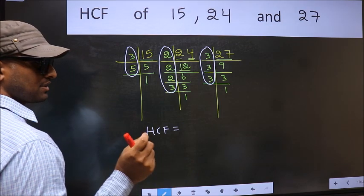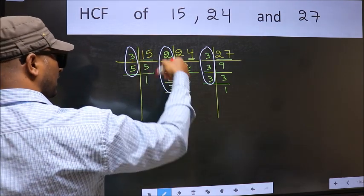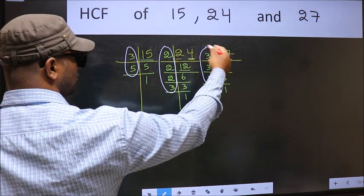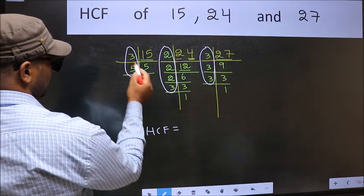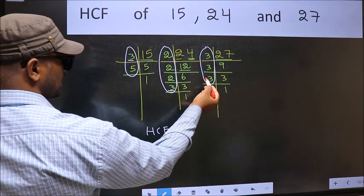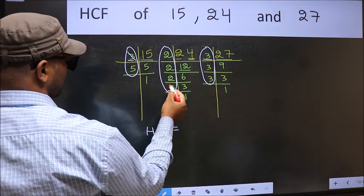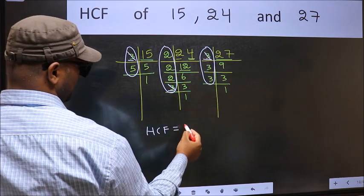So now let us find the numbers which should be present here, here and also here. Starting with the number 3. Do we have 3 here? Yes. So go to the next place. Do we have 3 here? Yes. So cut 3 right here.